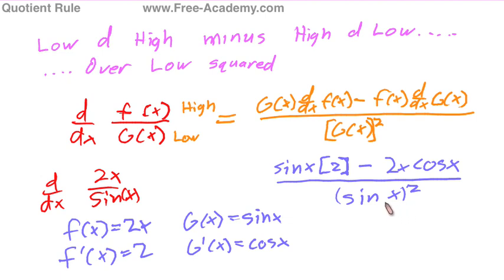This is all over g of x squared, sine of x squared. And that's our quotient rule. Very easy. All these have a common trait. You determine what your f of x and your g of x is going to be. Take the derivative of each, plug them into the formula. So the only thing you need to know is the formula to do these really.